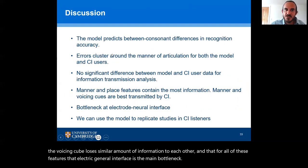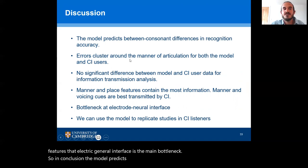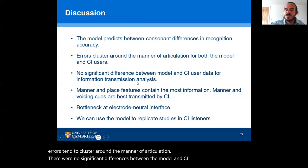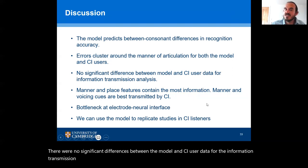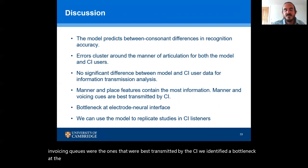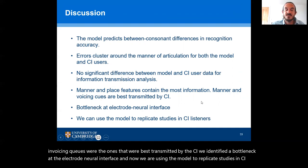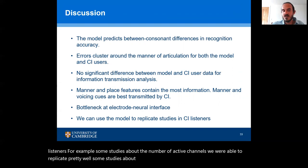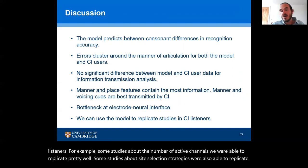In conclusion, the model predicts between-consonant differences in recognition accuracy. Errors tend to cluster around the manner of articulation. There were no significant differences between the model and CI user data for the information transmission analysis. Manner and place features contained the most information, while manner and voicing cues were best transmitted by the CI. We identified a bottleneck at the electrode-to-neural interface. We are now using the model to replicate studies in CI listeners — for example, studies about the number of active channels and site selection strategies — and we are looking to replicate others.